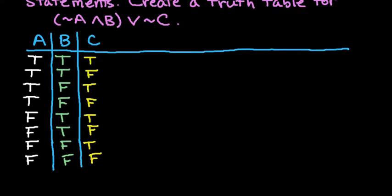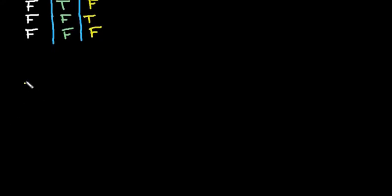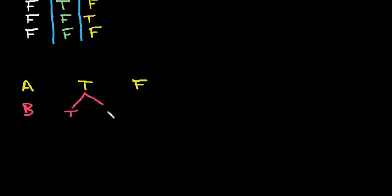If you're confused by why this is, it might help to look at it visually. For A, I have two choices — I can either have a true statement or a false statement. This is just to help you see why the pattern is what it is. For B, if the first statement was true, the second statement could be either true or false. So: first true, second true; first true, second false; first false, second true; or first false, second false.